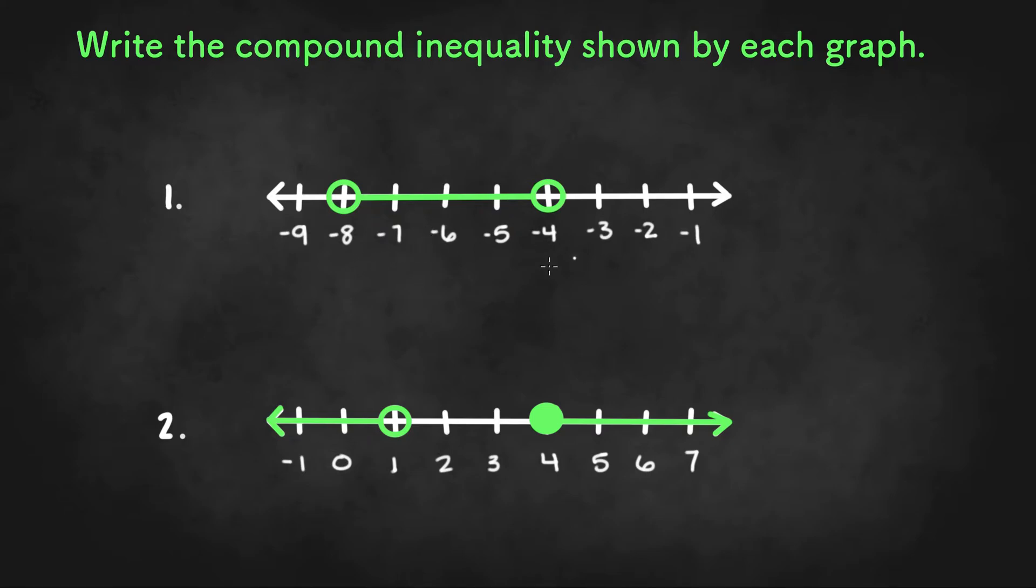So here we have two compound inequalities and it asks us to write the compound inequality shown by each graph. This first graph has an overlap and we can conclude that it's a graph representing a compound inequality with AND. And since the second one does not have any overlap and going in two different directions, it'll be a graph of OR.